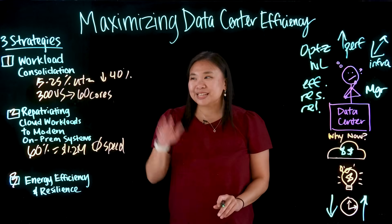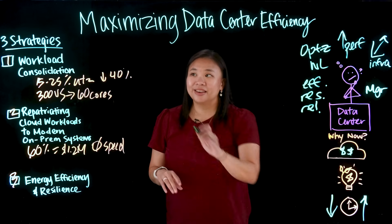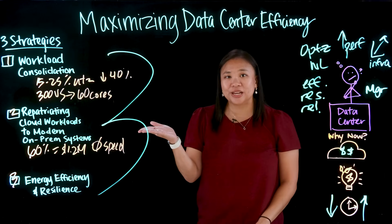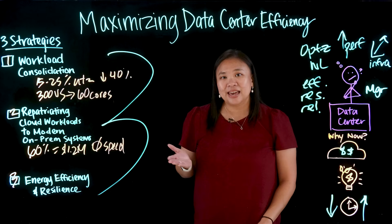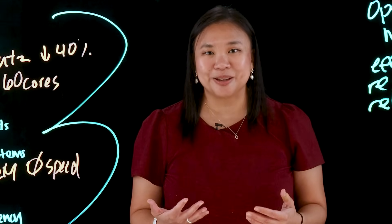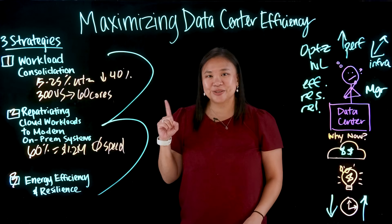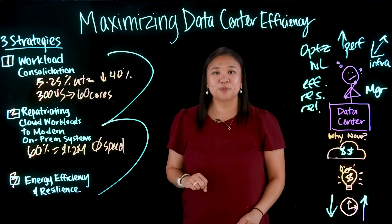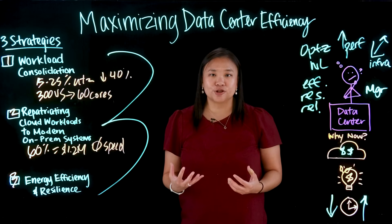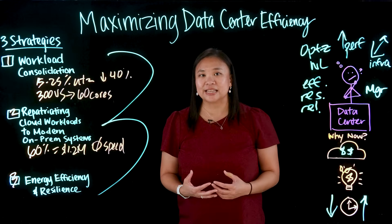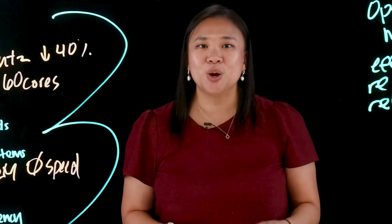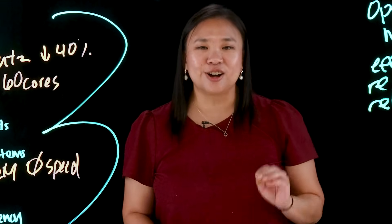Here's the bigger picture: these three strategies aren't standalone — they are interconnected. Consolidation simplifies operations, repatriation ensures workloads run optimally, and energy-smart resilient infrastructure keeps workloads reliable. To optimize your data center and enhance system performance, here's your roadmap: one, consolidate workloads to maximize resource utilization; two, repatriate workloads to on-prem systems for optimal performance; three, leverage modern infrastructure to ensure energy efficiency and resilience. This is how you turn your data center into a high-performance efficient system — a strategic asset, not just a cost center.